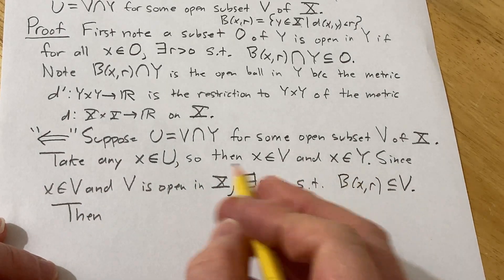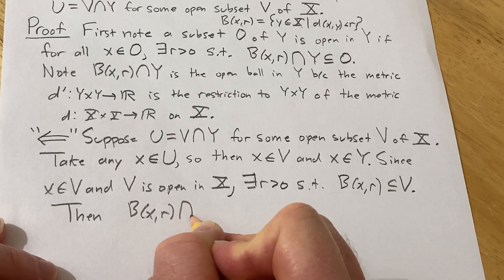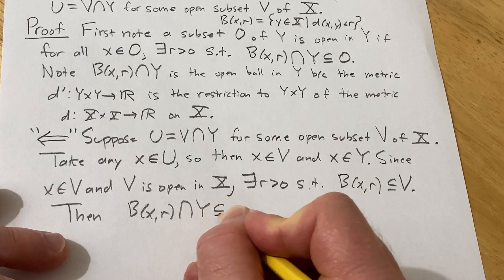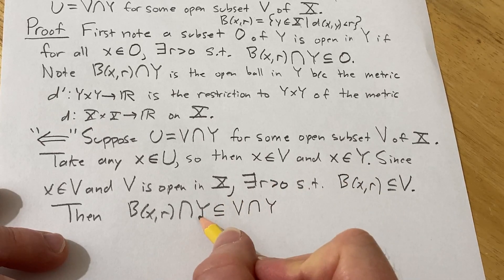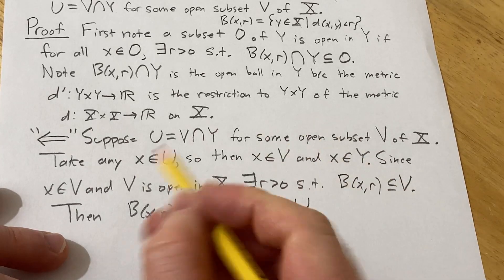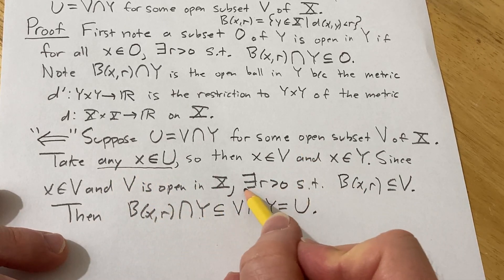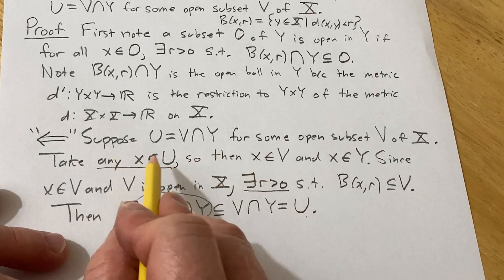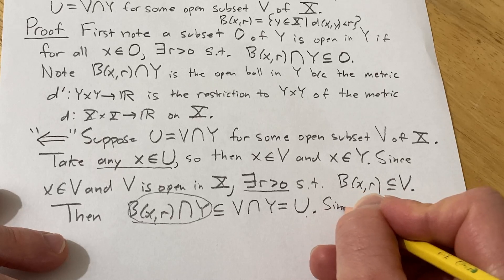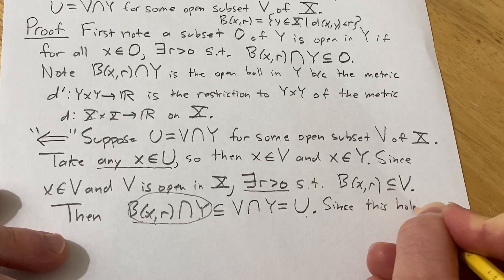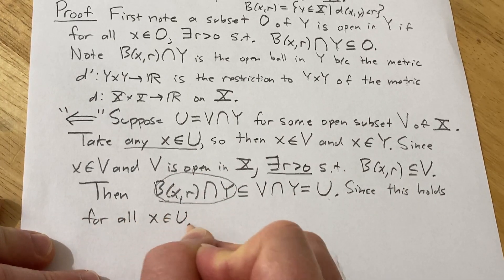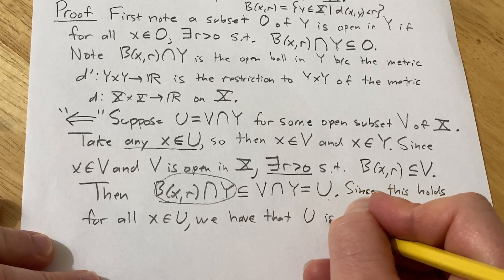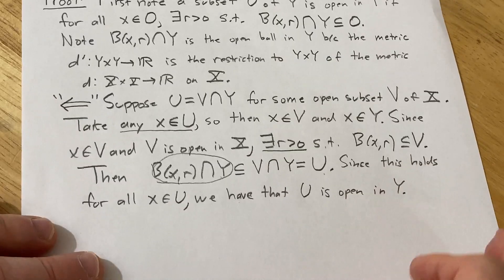If we take this open ball and intersect it with Y, we're restricting it to elements of Y — this is the open ball in Y — and this is contained in V intersect Y, which equals U. So we took any x in U and showed there exists a positive r such that the open ball in Y is contained entirely in U. That's precisely what it means for x to be an interior point. Since this holds for all x in U, we have that U is open in Y. That completes one direction of the proof.